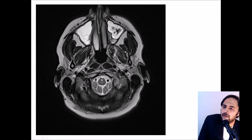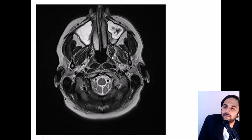Here is an example of a T2 image. You can see the white CSF surrounding the spinal cord, confirming this is a T2 image. The fat is bright but comparatively darker than in T1. The finer anatomical details are better identified on a T1 sequence, so T2 is basically used for pathologies.